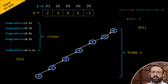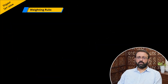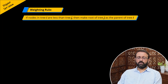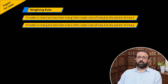To improve the performance of simple union algorithm, we have to make sure that the tree generated by the union operation will be of minimum height. To achieve this, we make use of the weighting rule for the union operation. The weighting rule states that if the number of nodes in tree i is less than the number of nodes in tree j, then we make the root of tree j as the parent of tree i. Otherwise, we make the root of tree i as the parent of tree j.